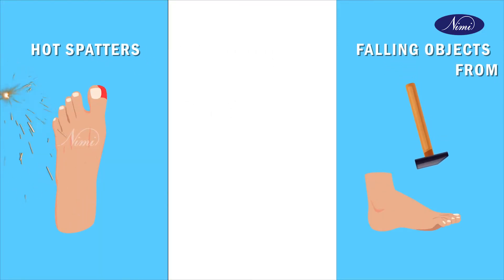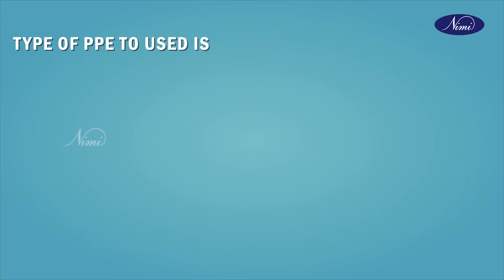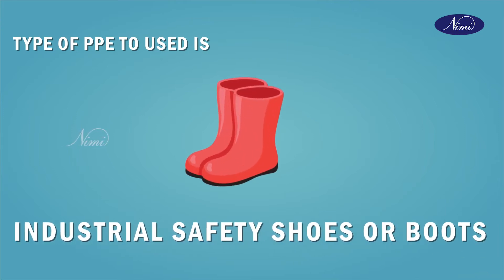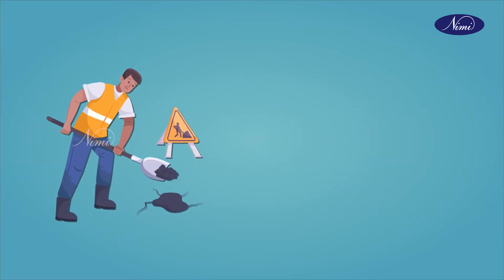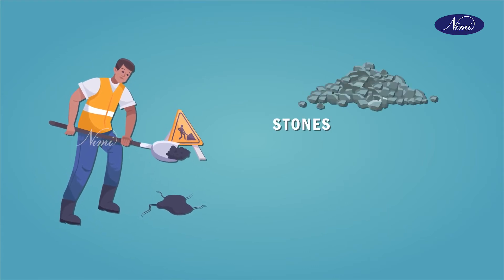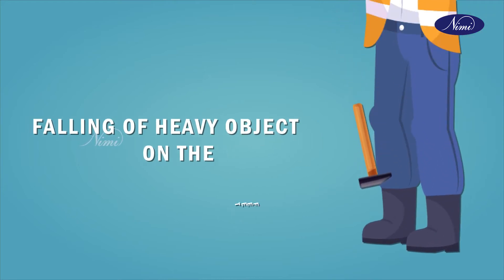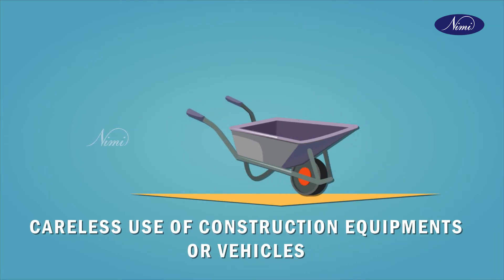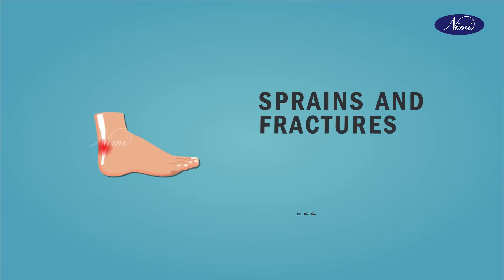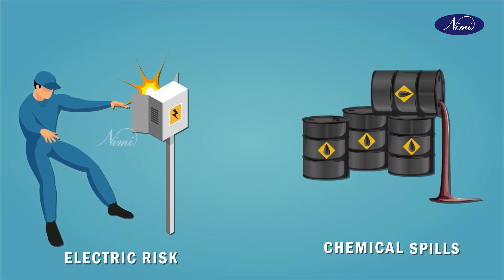The second type of protection is foot protection. The hazards are due to hard spatters, falling objects from heights, and working in bad areas. The type of PPE to be used is an industrial safety shoe or boot. Shoes are designed to provide protection from injuries due to objects like stones and sharp nails piercing the feet, or falling of heavy objects on the feet, careless use of heavy-duty construction equipment and vehicles, sprains and fractures due to slips and falls, and electric risks and chemical spills.